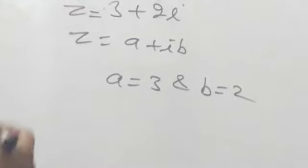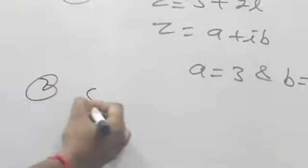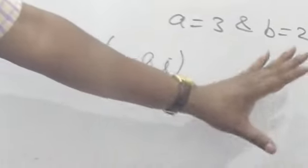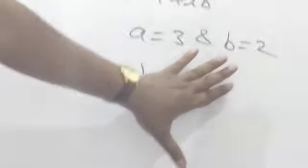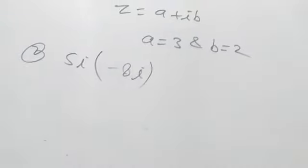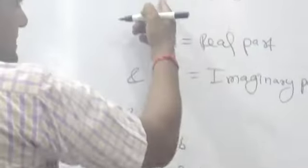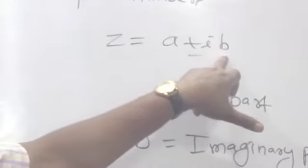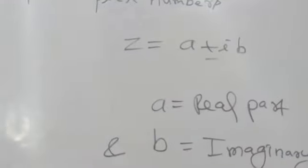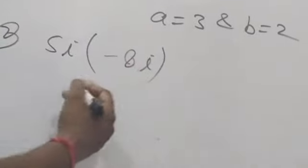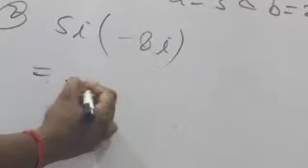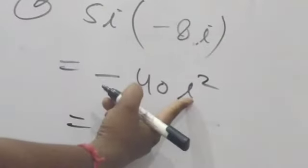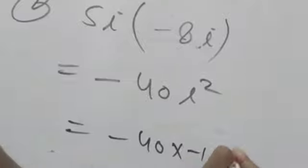Now the second example: suppose 5i × (-8i). If any expression is given in multiply, divide, subtraction, or addition form, first we should try to write it in the form Z = A ± iB. So 5i × (-8i) = -(5 × 8) × i² = -40 × (-1) = 40.